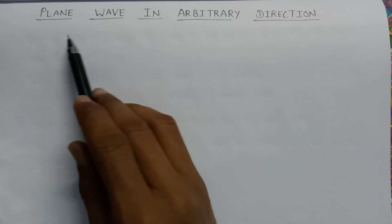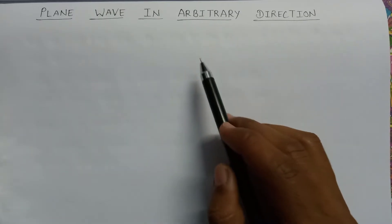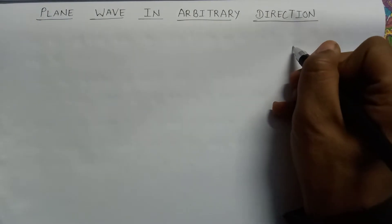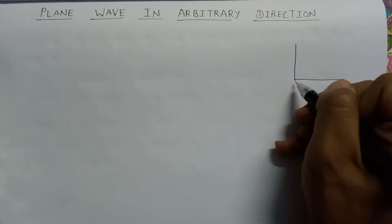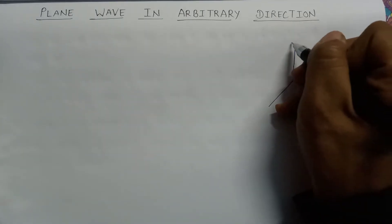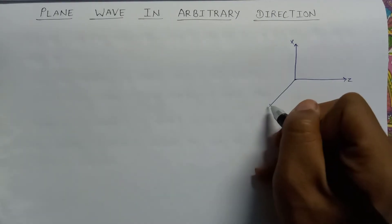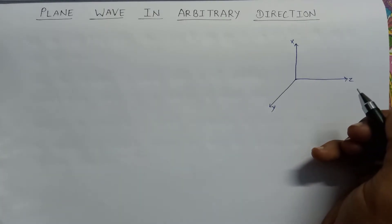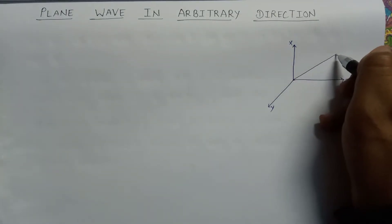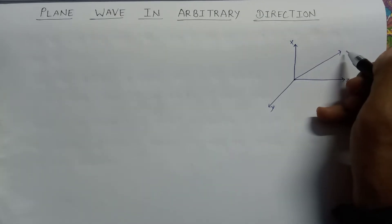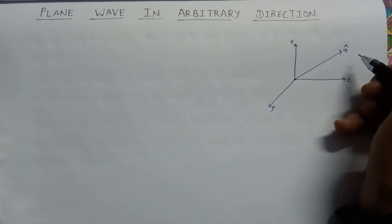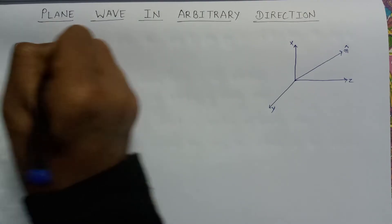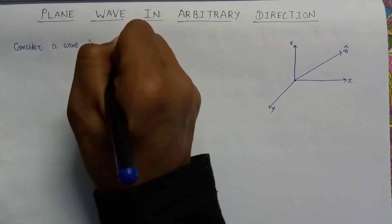Welcome. In this lecture we are going to learn about plane wave in arbitrary direction. We will learn how the plane wave moves in an arbitrary direction. For the propagation of the plane wave in arbitrary direction, let us have three coordinates in the x, y, and z direction. Consider the wave is propagating in arbitrary direction, and the direction is specified by the unit vector n cap.